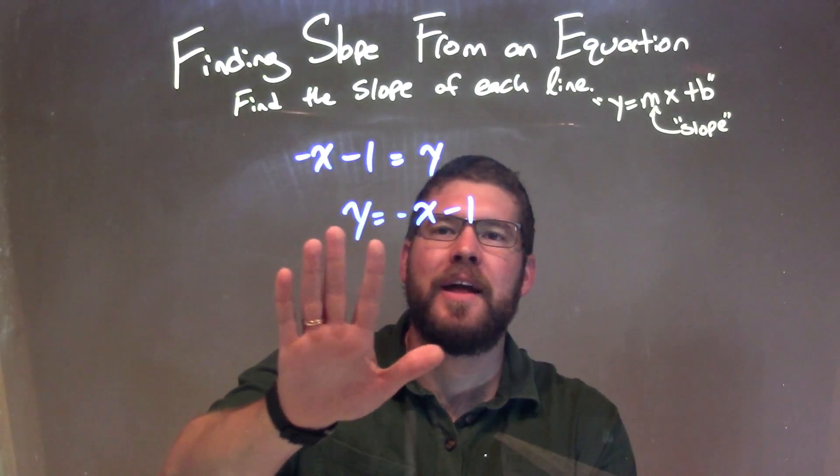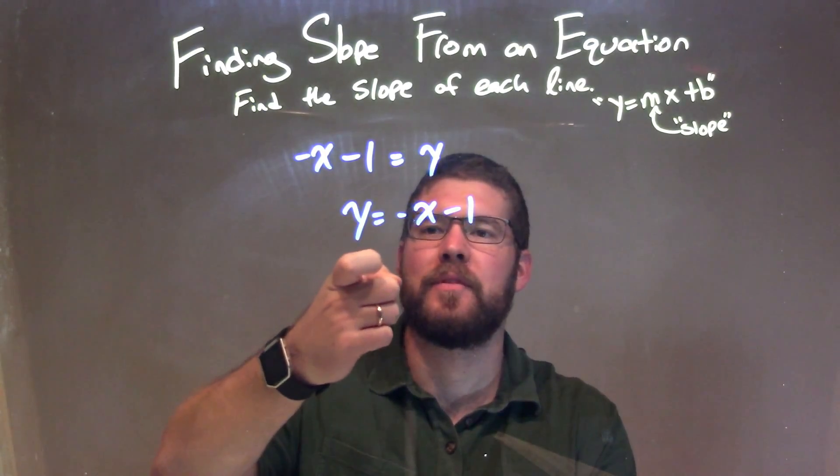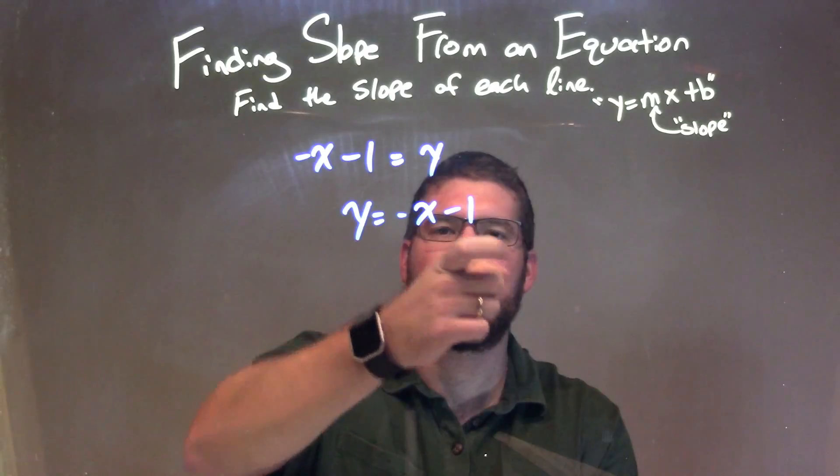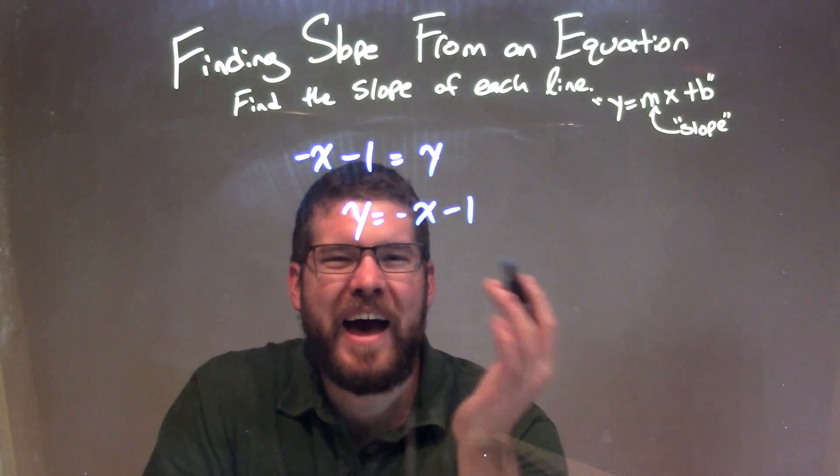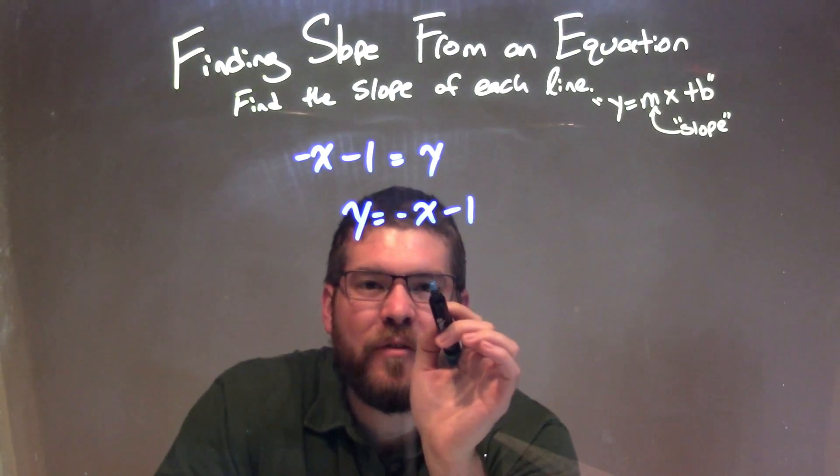So now I have y isolated, and this is actually in our slope-intercept form, y equals mx plus b. Our slope is the coefficient for our x, which you can see is just that negative 1.